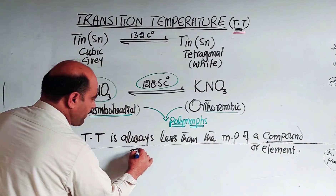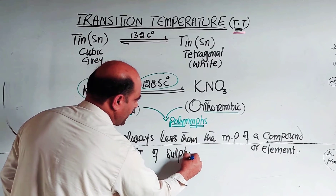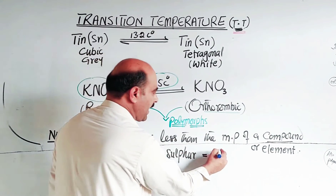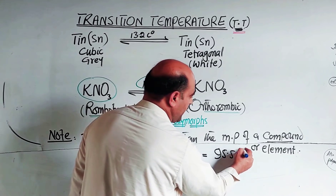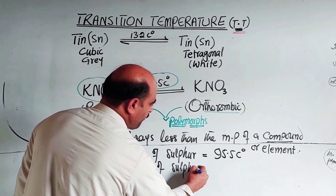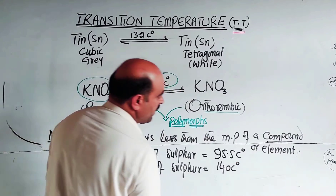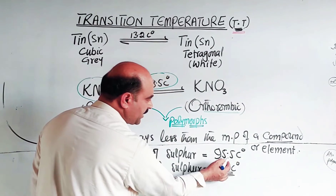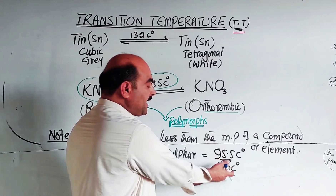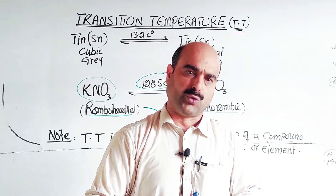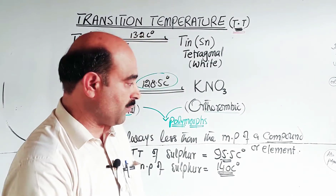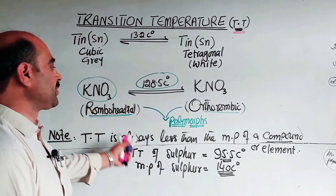For example, the transition temperature of sulfur is 95.5°C, while the melting point of sulfur is 140°C. So the transition temperature is less than the melting point. The transition temperature relates to the solid crystalline state — it is about the geometrical shape change within the solid state — so it must be less than the melting point.